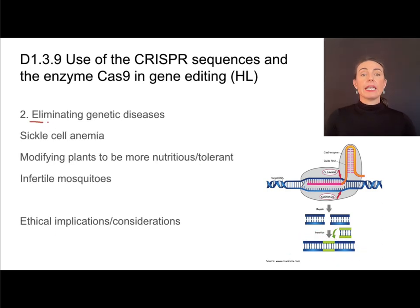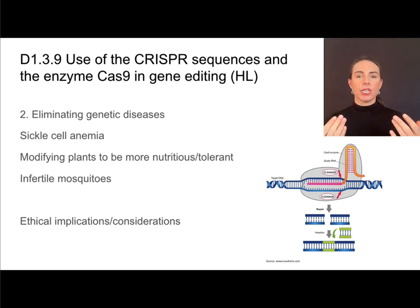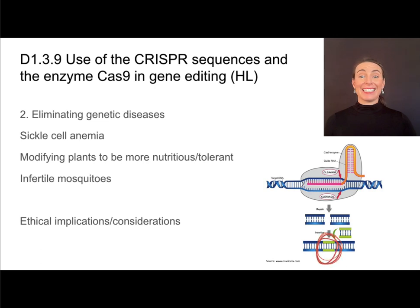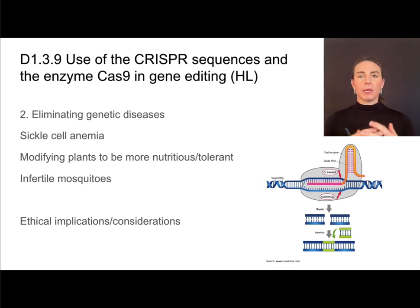The second application is the elimination of genetic diseases — cutting out faulty alleles or genes altogether, such as sickle cell anemia. We can also modify plants to become more nutritious or tolerant; for example, inserting a gene that allows a plant to be drought tolerant — a gene it didn't even have to begin with. We can also use CRISPR and Cas9 to create infertile mosquitoes by changing the gene necessary for gamete production, cutting down the mosquito population.